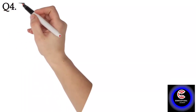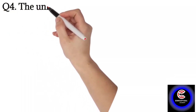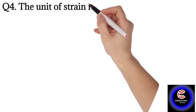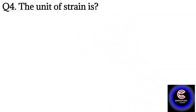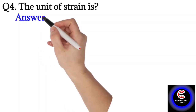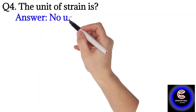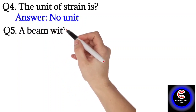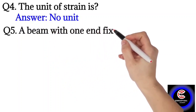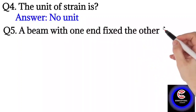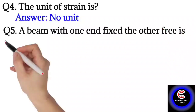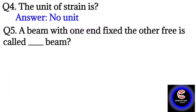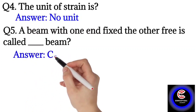Question number four: the unit of strain. Strain has no units, so the answer is no unit. Question number five: a beam with one end fixed and the other end free is called a cantilever beam.